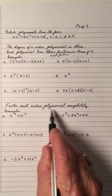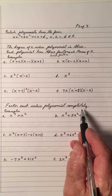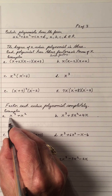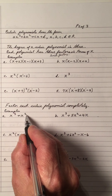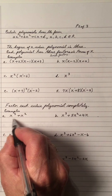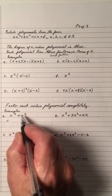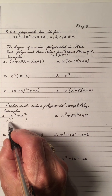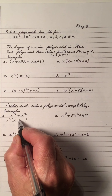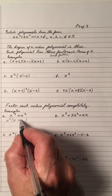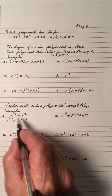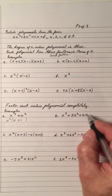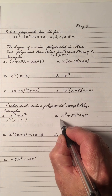Let's factor each cubic polynomial completely. We have them in descending order. x is common and the smallest exponent is 2, so the GCF is x squared. So x cubed divided by x squared is x, plus x squared divided by x squared is 1. Notice you have two terms here, so you have to have two in here. And the GCF is x again.